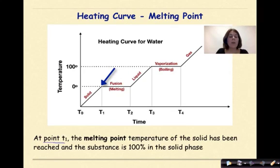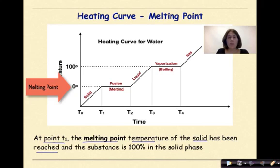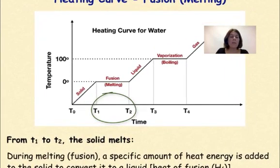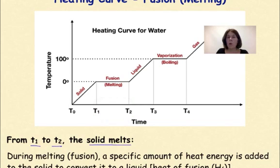At point T1, the melting point temperature of the solid has been reached, which we can see here on the graph. And the substance is still 100% in the solid phase. So right at the melting point, right exactly at T1, everything is a solid and there is no liquid whatsoever. Now, from T1 to T2, the solid is going to melt over time.